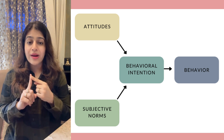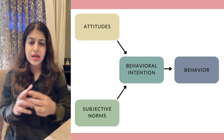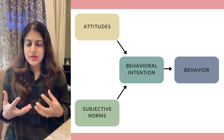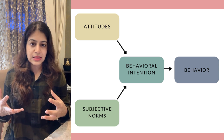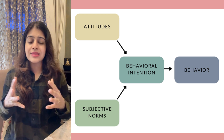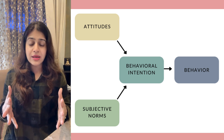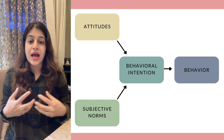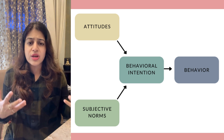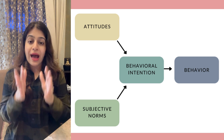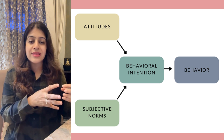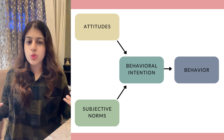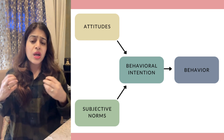So where does this intention come from? It comes from two things: one is your attitude, and the second is subjective norms. Attitude means your personal feelings and thought process — maybe you feel that you have to succeed in life, you want to grow, earn money, buy a nice house, a luxury car. Because of your attitude, a certain intention is formed.